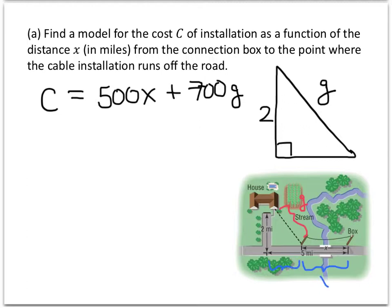If this distance is x, and the whole distance from the box, which is here, to the part where the driveway meets the road, that distance is 5 miles. And if this piece of that distance is x, then the number that you have to add to x to get up to 5 is 5 minus x. If one piece is x and the whole thing is 5, then the other piece is going to be 5 minus x.